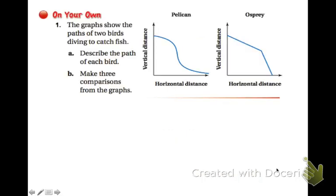So we're going to get a chance to describe the path of each bird. Looking at the pelican, you can see the vertical distance and the horizontal distance. The pelican is traveling along and it's actually descending. And at first it's descending slowly and then it starts to descend pretty quickly until it gets to the ground. As it gradually approaches the ground, it's descending slowly again.